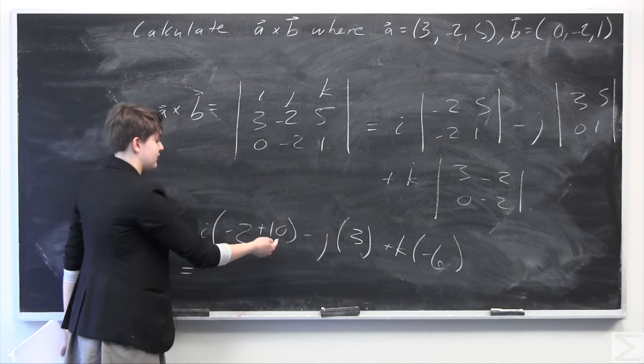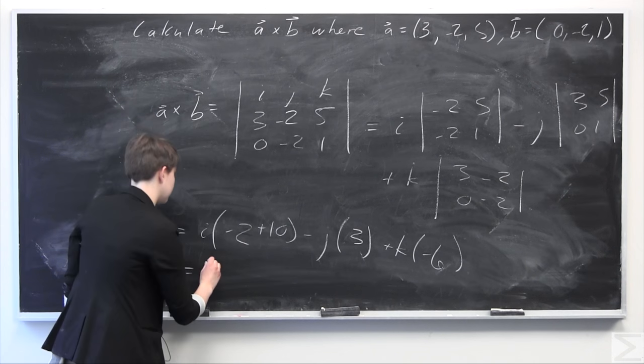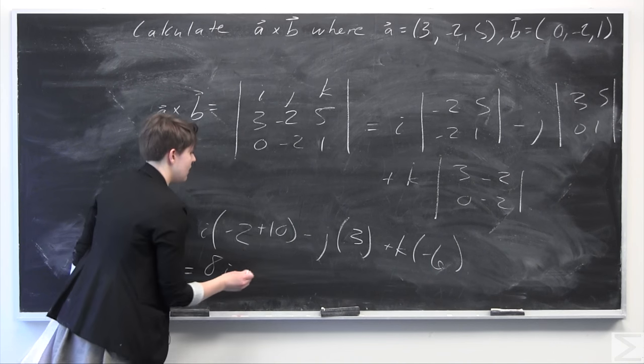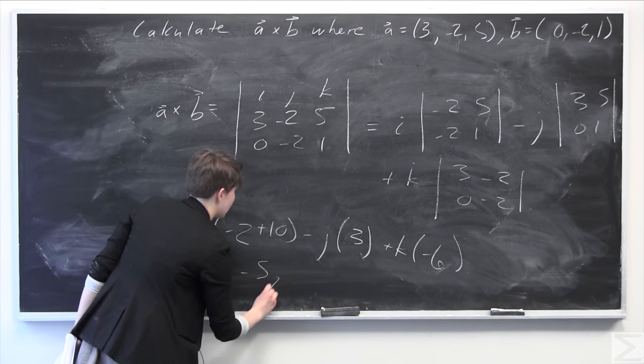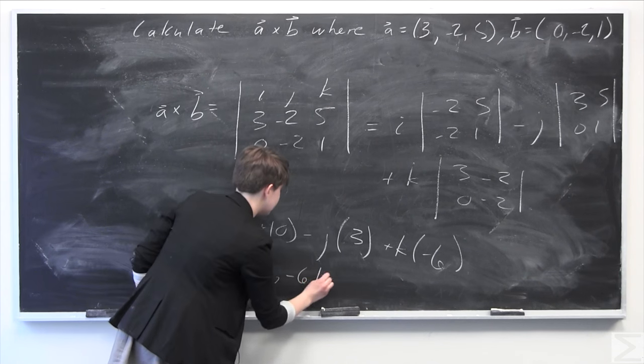We can simplify this. -2 plus 10 is just going to be 8, so we have 8i. Minus 3j, minus 6k.